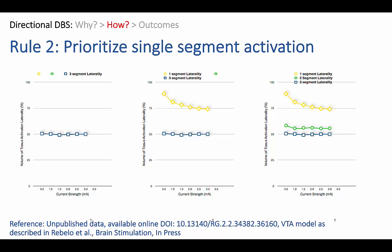When you want to steer current between two segments — when you want to fractionate currents between two segments — you do sacrifice the increased laterality or increased asymmetry that directional DBS can produce.